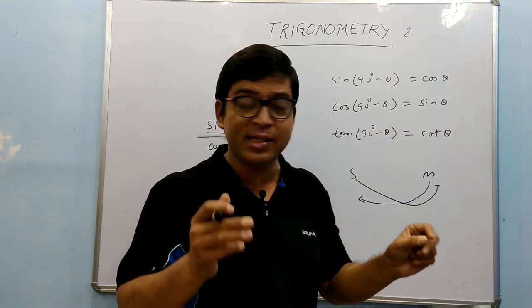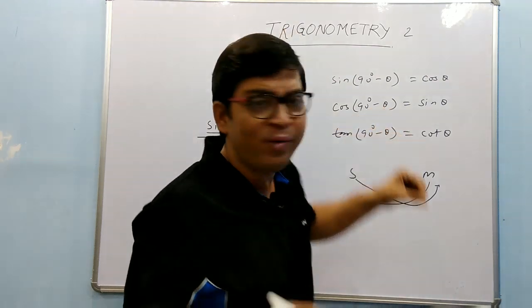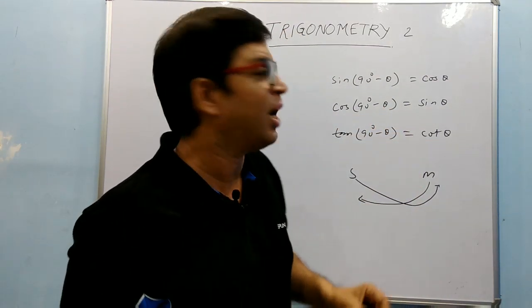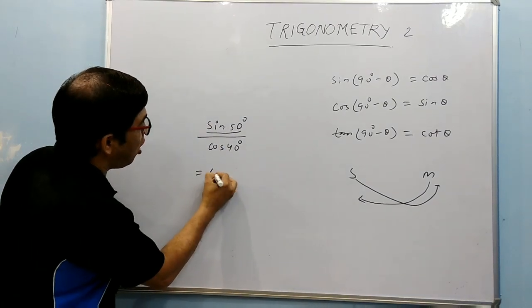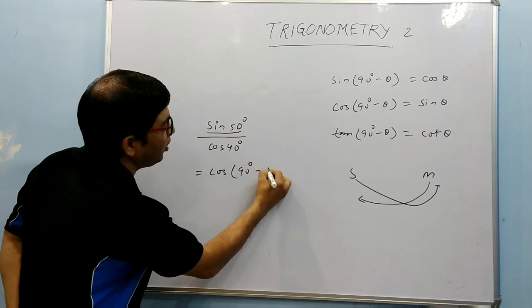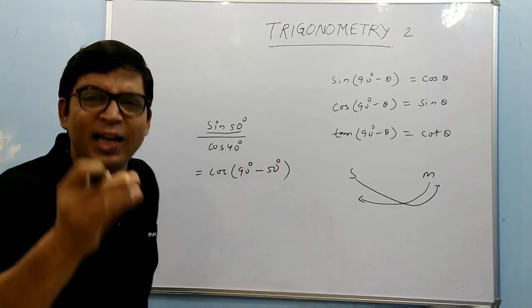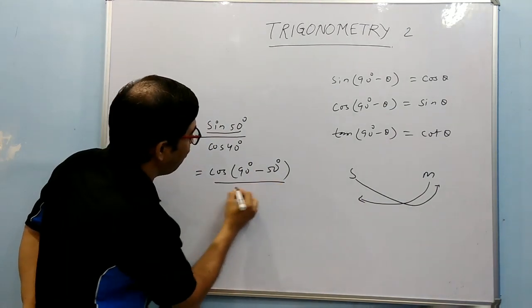Sin θ is cos(90° - θ) instead of using cos θ as sin(90° - θ). If you use in this way, you will get confused sometimes. So sin θ will be cos(90° - 50°) / cos 40°.